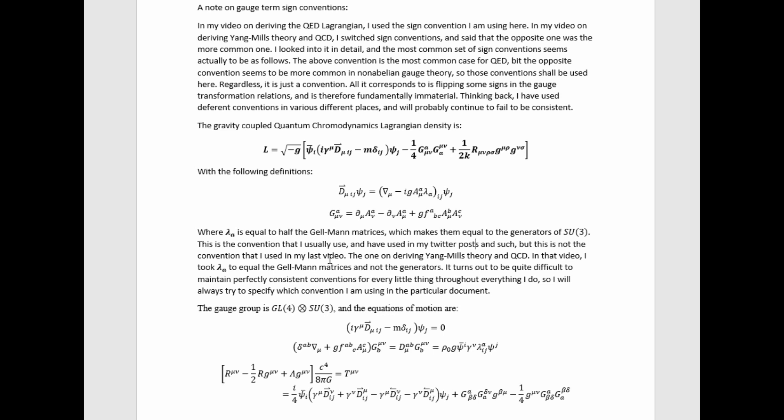but this is not the convention that I used in my last video on deriving the quantum chromodynamics Lagrangian density. In that one, I took lambda A to be equal to the Gelman matrices, and the generators to be equal to half of them.